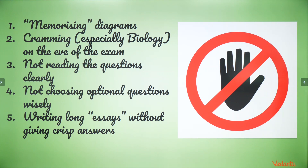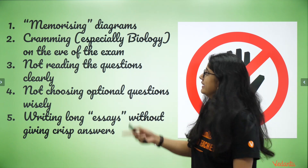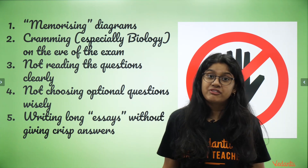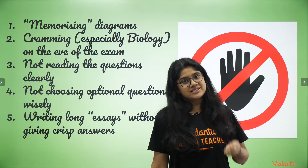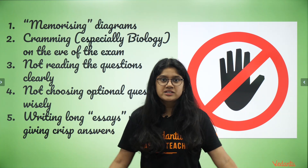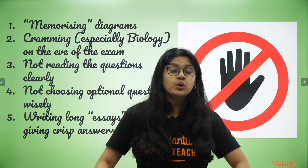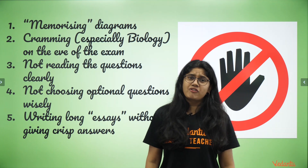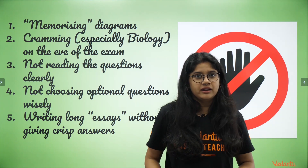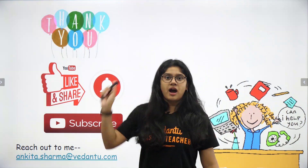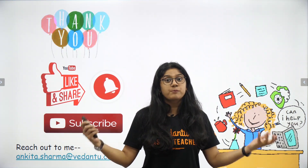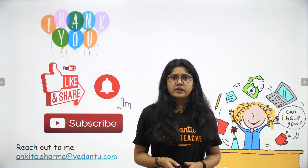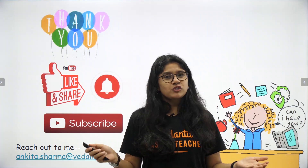So let's recap the five mistakes we usually make: one, memorizing diagrams without practicing drawing; two, cramming biology; three, not reading questions properly; four, not choosing questions wisely; and five, writing long essays even in short answers. It's a humble request — avoid these five mistakes to get amazing marks in biology in your ninth class. If you liked the video, hit the like button, share with your friends, and subscribe to Vedantu's channel. Hit the bell icon to know when we post a new video. If you have any inquiries, write to us on the email address shown. All the best for your examination and preparation. Lots of love from Vedantu — bye bye!